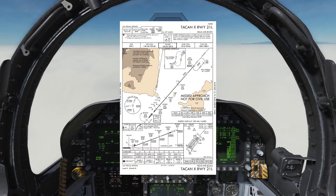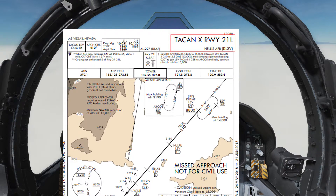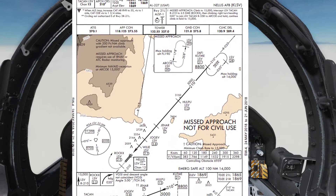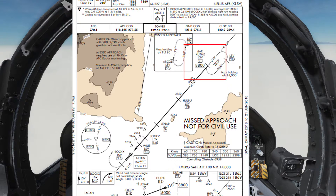Let's have a closer look at how to read this chart. At the top right we've got the name: TACAN X-Ray Runway 21L. In the middle section we have the diagram which is sort of like a bird's eye view. It shows us our distances and levels that we need to be at for every point. We can see that the approach starts at a waypoint called Cut Me, which is the initial approach fix, and it's at 21 miles from the TACAN.